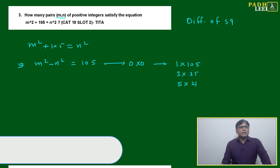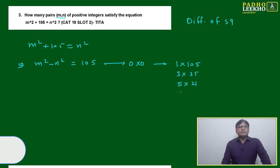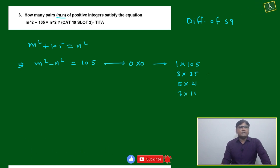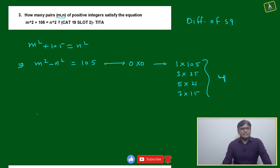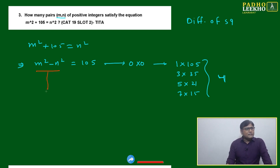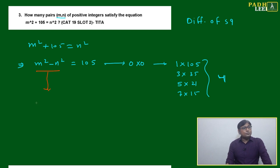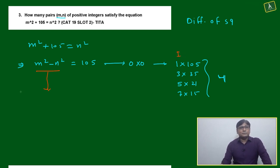Next it will be 7×15. So we got four ways, meaning the answer will be four. Whether you write it out this way or solve it using algebra, both are welcome. You can try to know all the ways. This is your first way, this is your second way.